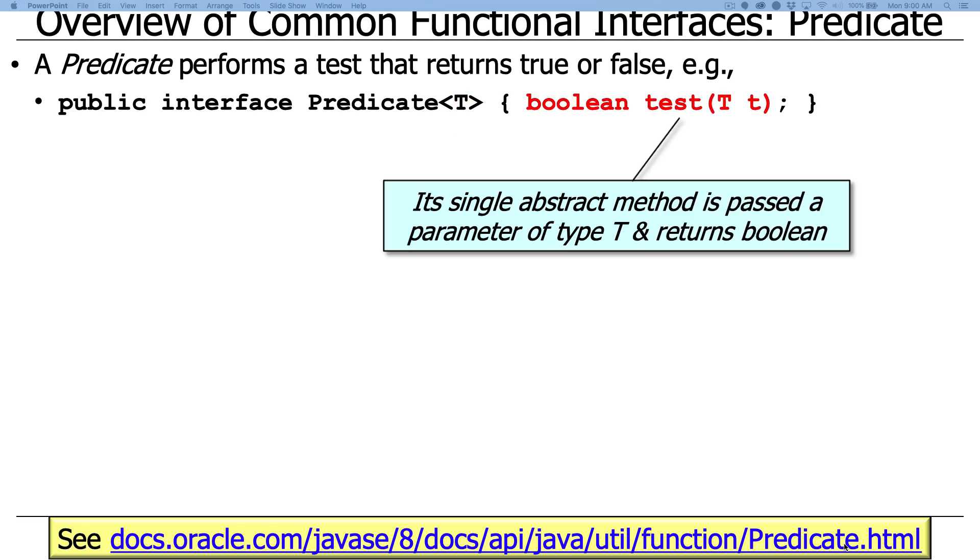And you'll see that there's also a single method called test. And of course, it's an abstract method, which means that you have to provide an implementation of the predicate and fill in what it means to do this test. And as you can see, the test method takes an object of type T, which is the parameter, does some kind of evaluation, and returns true or false.